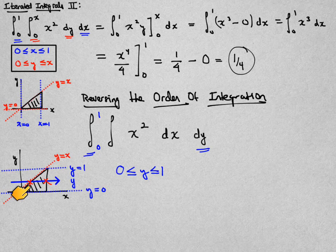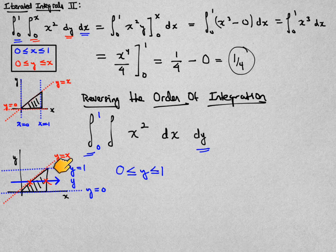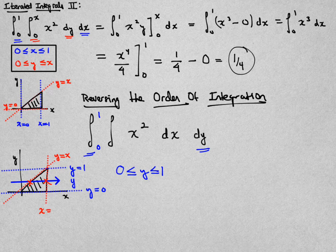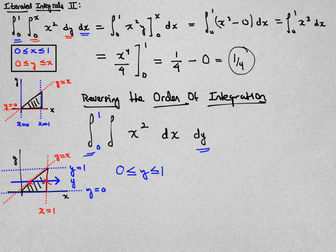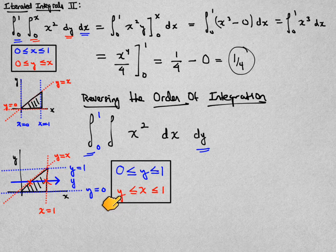The place where it enters is where my y value and my x value agree, and it exits where my x value is always equal to 1. This tells me that my x should start where my y value equals my x value.